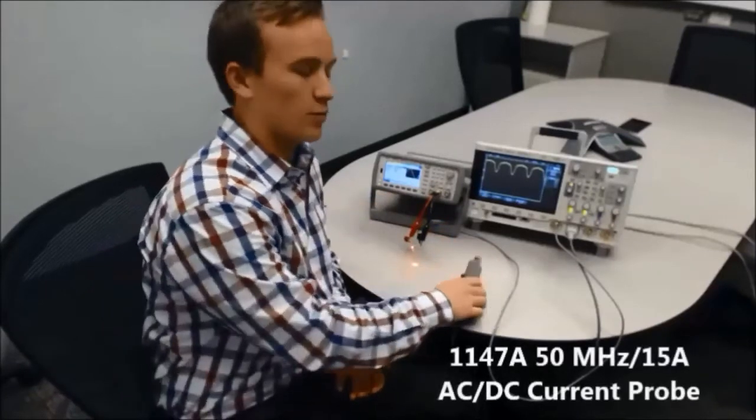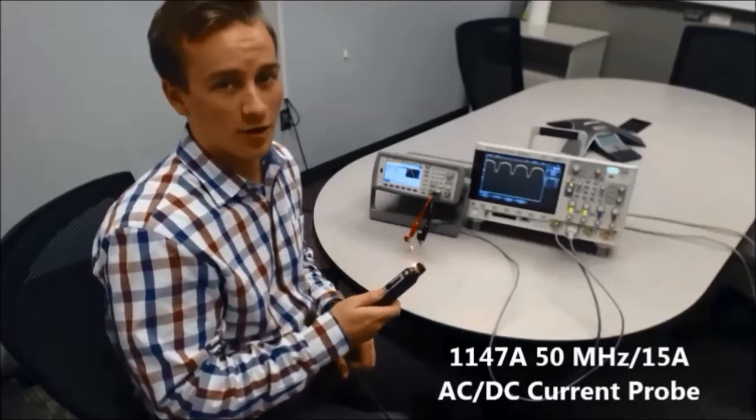On channel 2 of the oscilloscope, we have a current probe, which we're going to be measuring the current from the diode to ground.